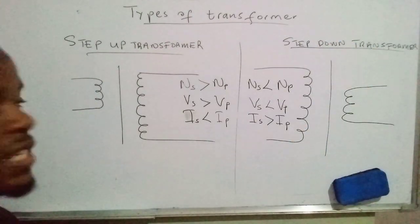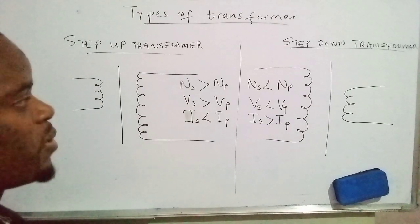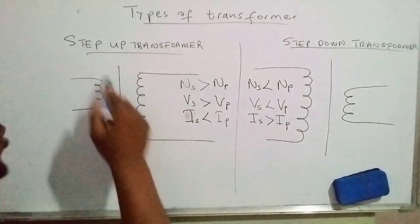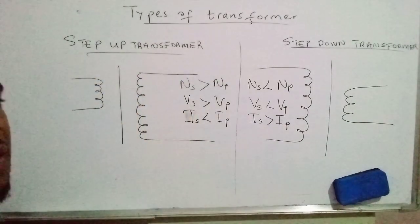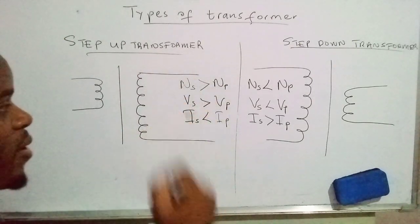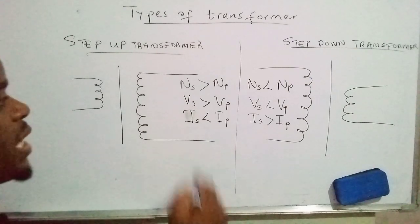look like in terms of symbols? This is actually the step-up transformer. This one is the primary coil and it has fewer turns compared to the secondary coil. Now, symbolically or mathematically we'll